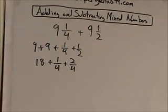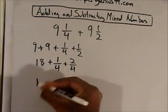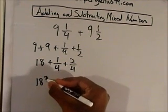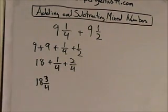Okay. And then now what is one-fourth plus two-fourths? That's three-fourths. So nine-and-a-half plus nine-and-a-fourth is eighteen-and-three-fourths. So that's pretty good. All right. Let's try another one.